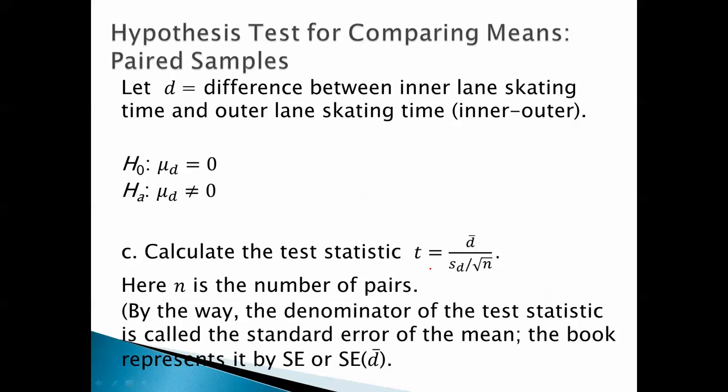Calculate the test statistic. Here n is the number of pairs. So we've got the sample mean, sample standard deviation, square root of n. By the way, the denominator of the test statistic, all of this stuff, is called the standard error of the mean. The book represents it by se or se of d bar.